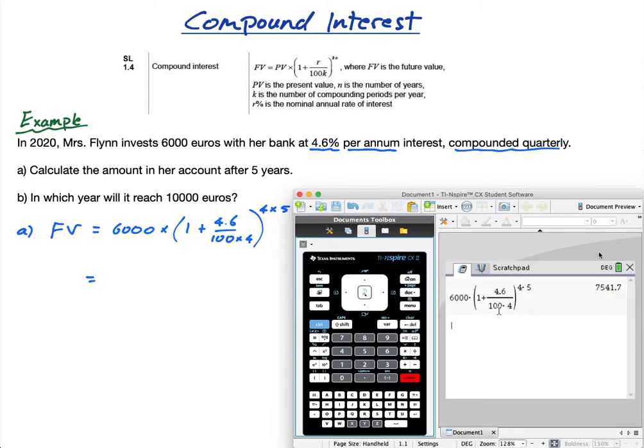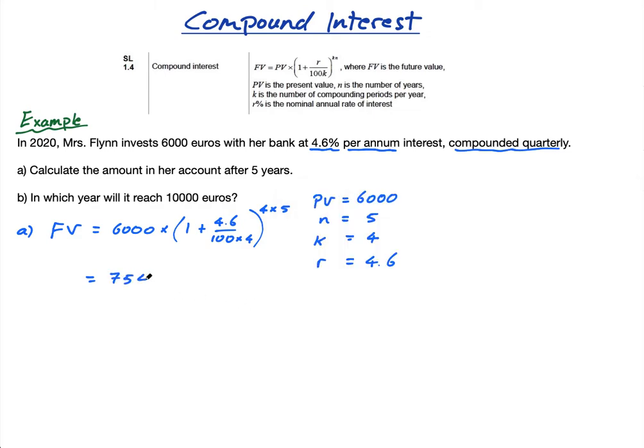Press enter and I get 7,541.70. So Mrs. Flynn's amount is now up to 7,541.70 euros. Note a question might be calculate how much interest she earned, and if that's the case you do this minus 6,000 to give you 1,541.